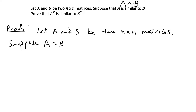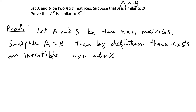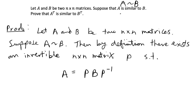By definition of similarity, there exists an invertible n by n matrix P such that A is equal to P times B times P inverse. We know that this is true and that this exists because that is the definition of matrix similarity.